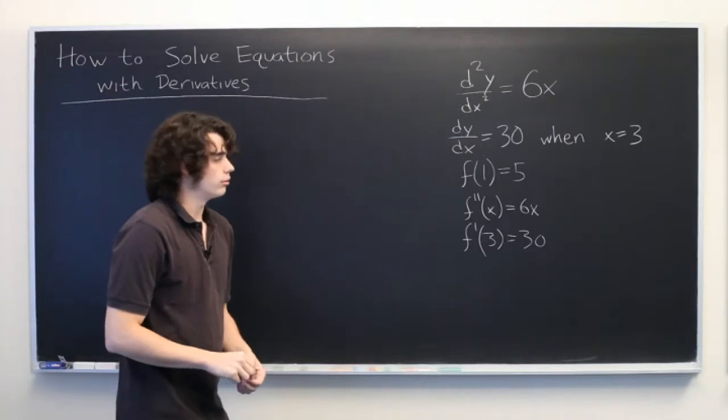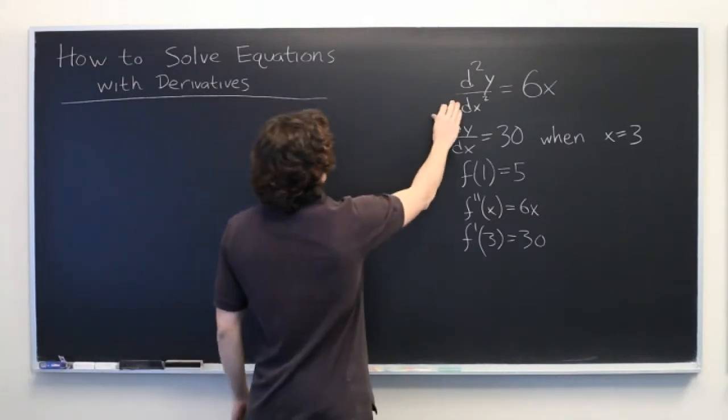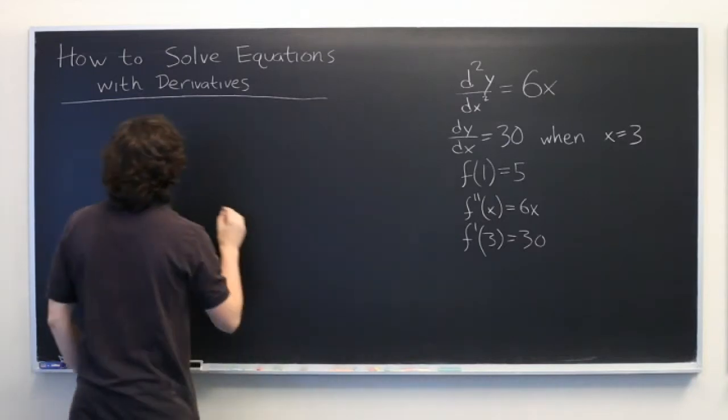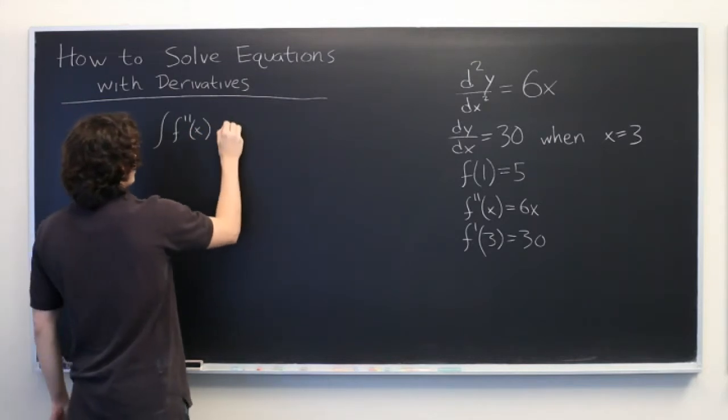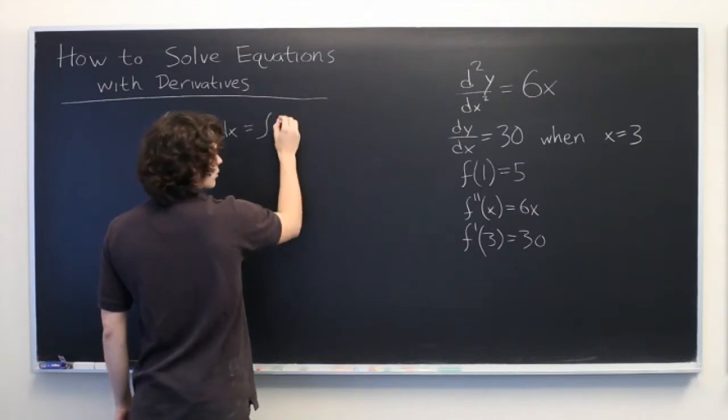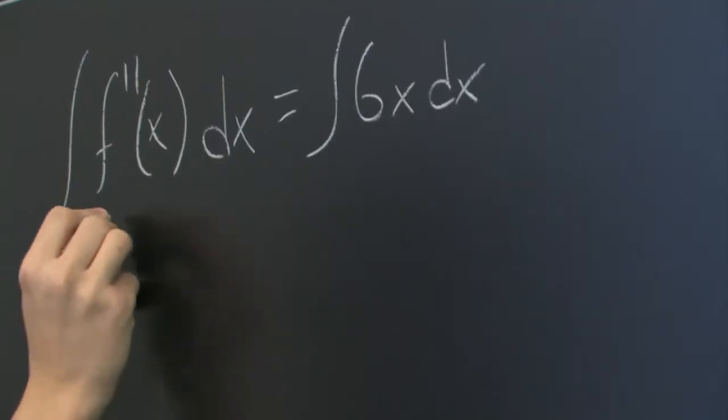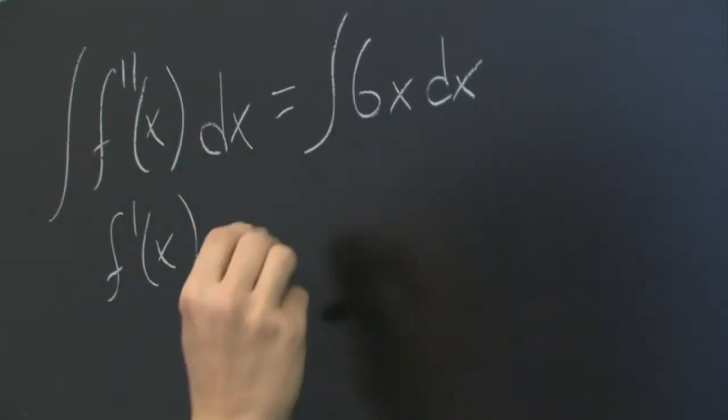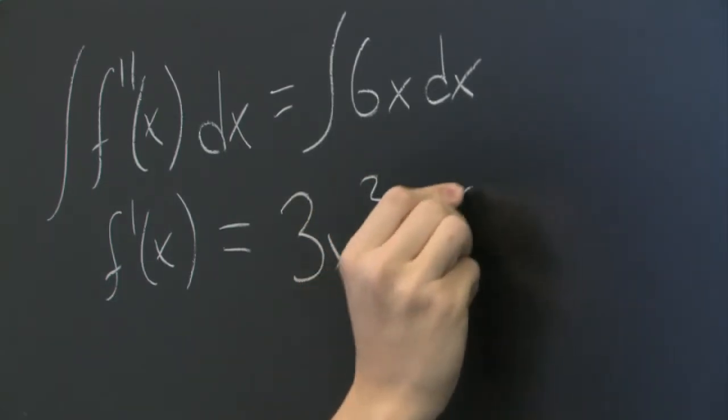And this is enough information to determine what f of x is. Let's start by taking the anti-derivative of both sides of this equation. Integral of f double prime of x dx equals the integral of 6x dx. So, here on the left side, we get f prime of x. And on the right side, we get 3x squared plus some constant c, which we don't know yet.